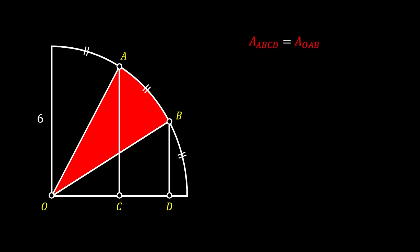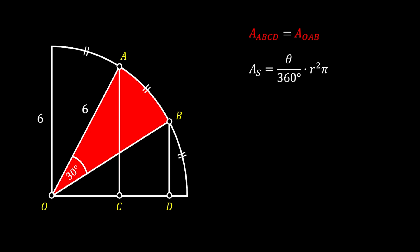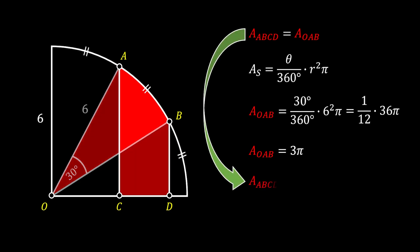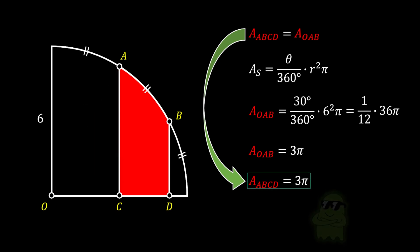So all we have to do is find the area of this circular sector with a central angle of 30 degrees and radius of 6. The formula for circular sector area looks something like this. If we substitute the values for the angle and the radius, we will get the following equation. We can simplify this and we finally get that the red area is equal to 3π. Since this area is equal to our wanted shaded area ABCD, this means that area ABCD is also equal to 3π square units, and this is our solution.